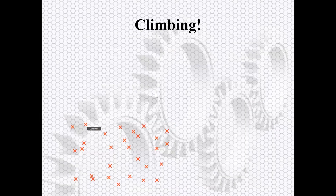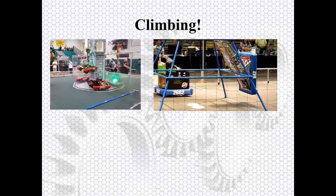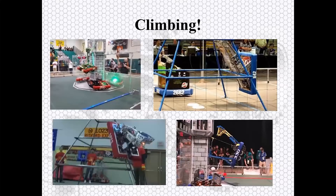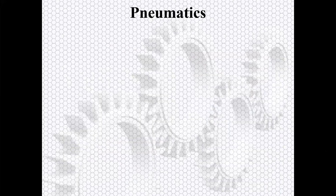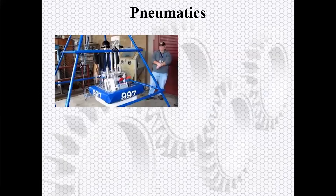There's nothing so exciting as watching a whole bunch of robots lift up off the ground and nothing so terrifying as watching one fall. If you've ever been in the pits and hear the crowd go 'Ooh' — a robot fell. As far as climbing goes, there are two basic methods: pneumatics and a winch. There are other options, but really that's what's going down. You can do it with a chain drive, but essentially that's a winch by another name. We're going to talk about pneumatics first.